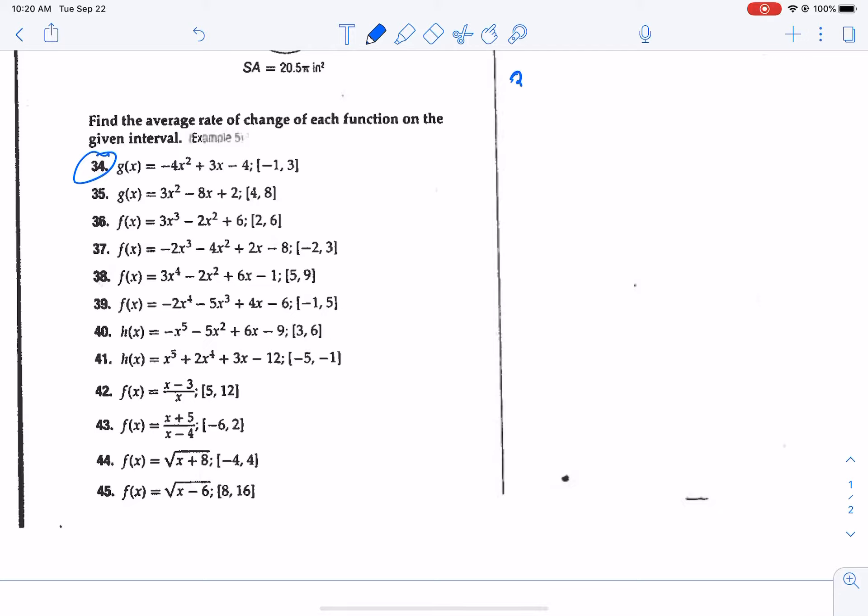This says to find the average rate of change of each function on the given interval. So for 34, write down your function. Now our interval for this one is negative 1, 3. Now what does that mean? Well, those are, this is your x1, this is your x2. Those are x's.